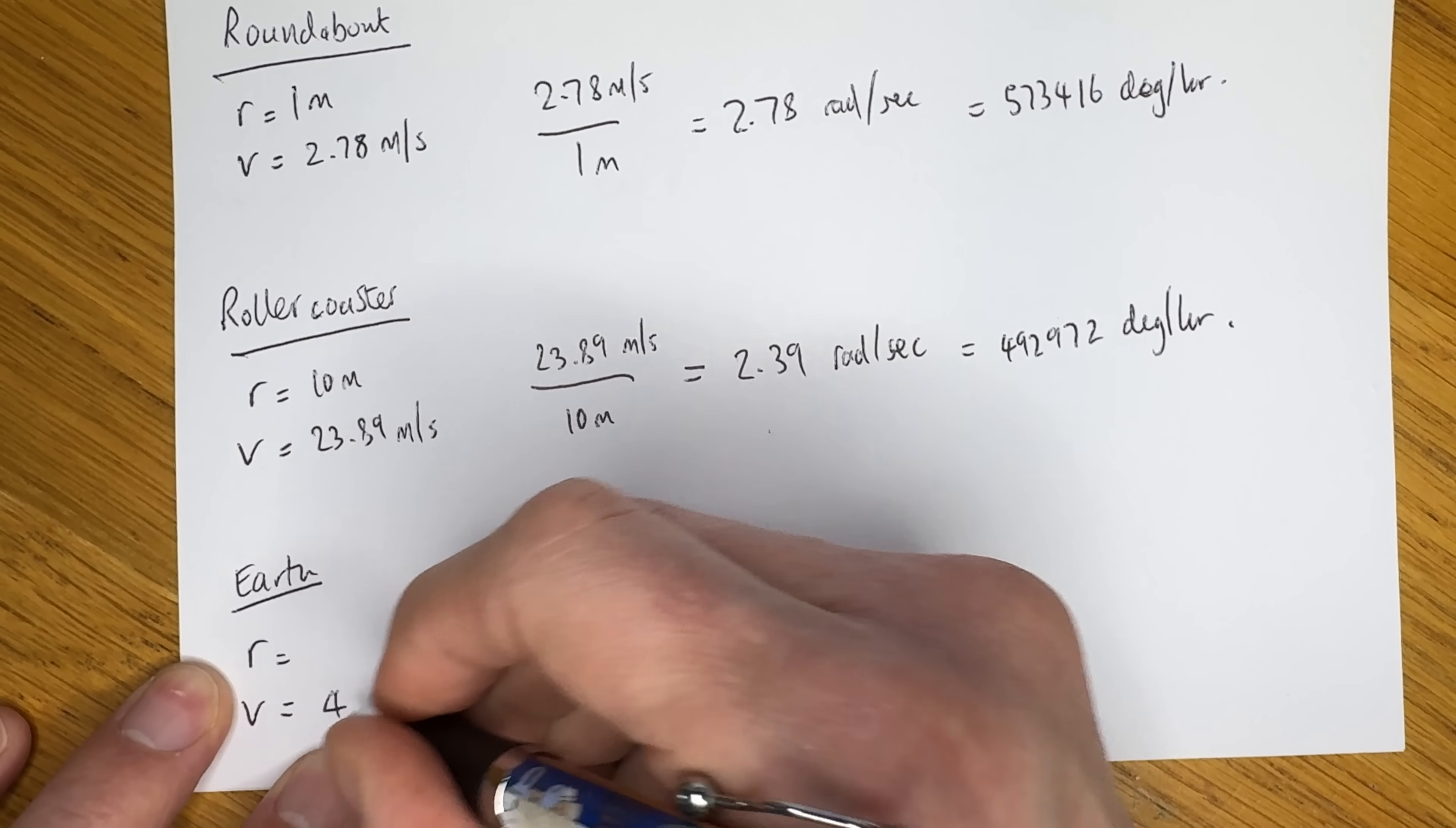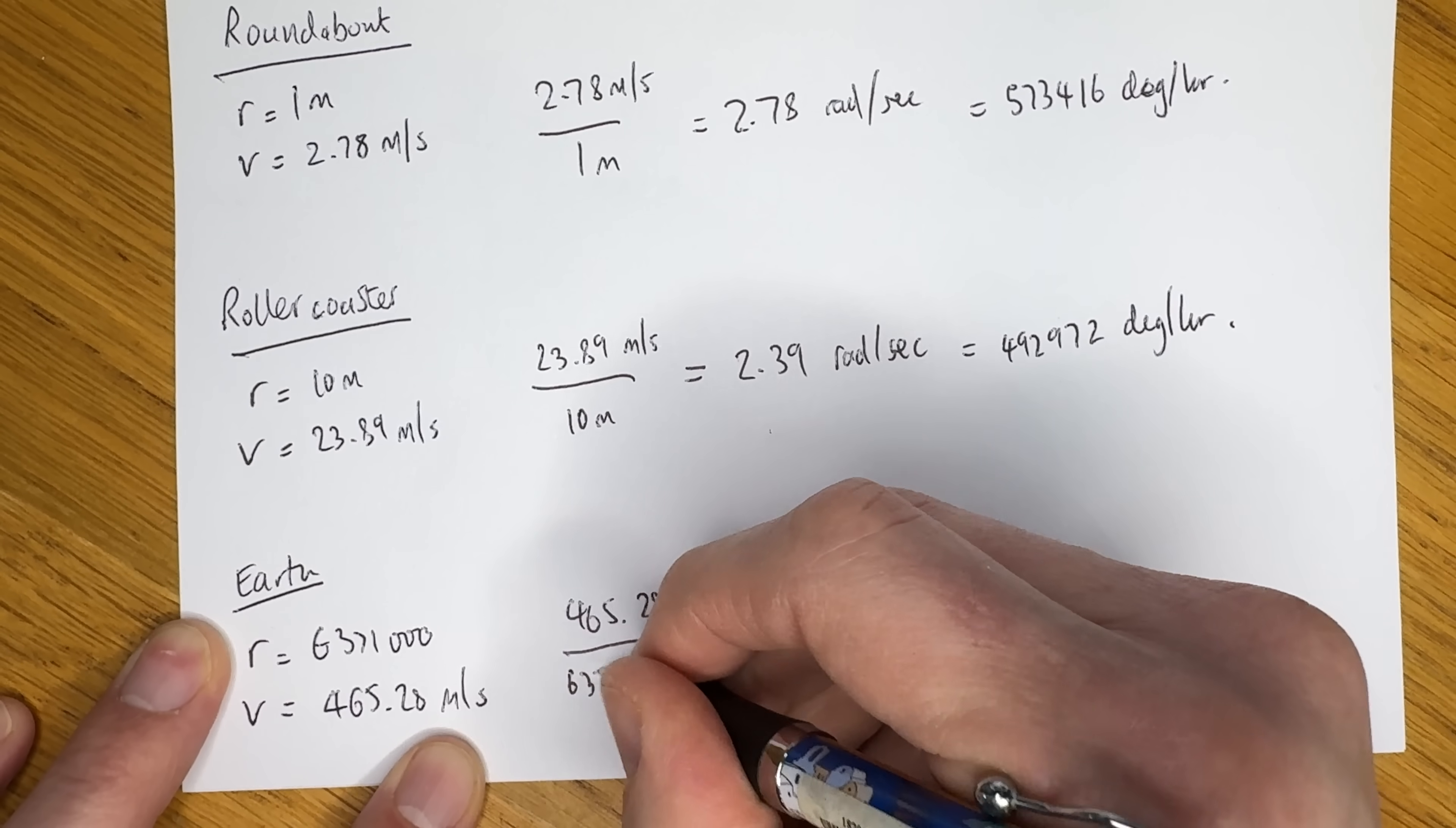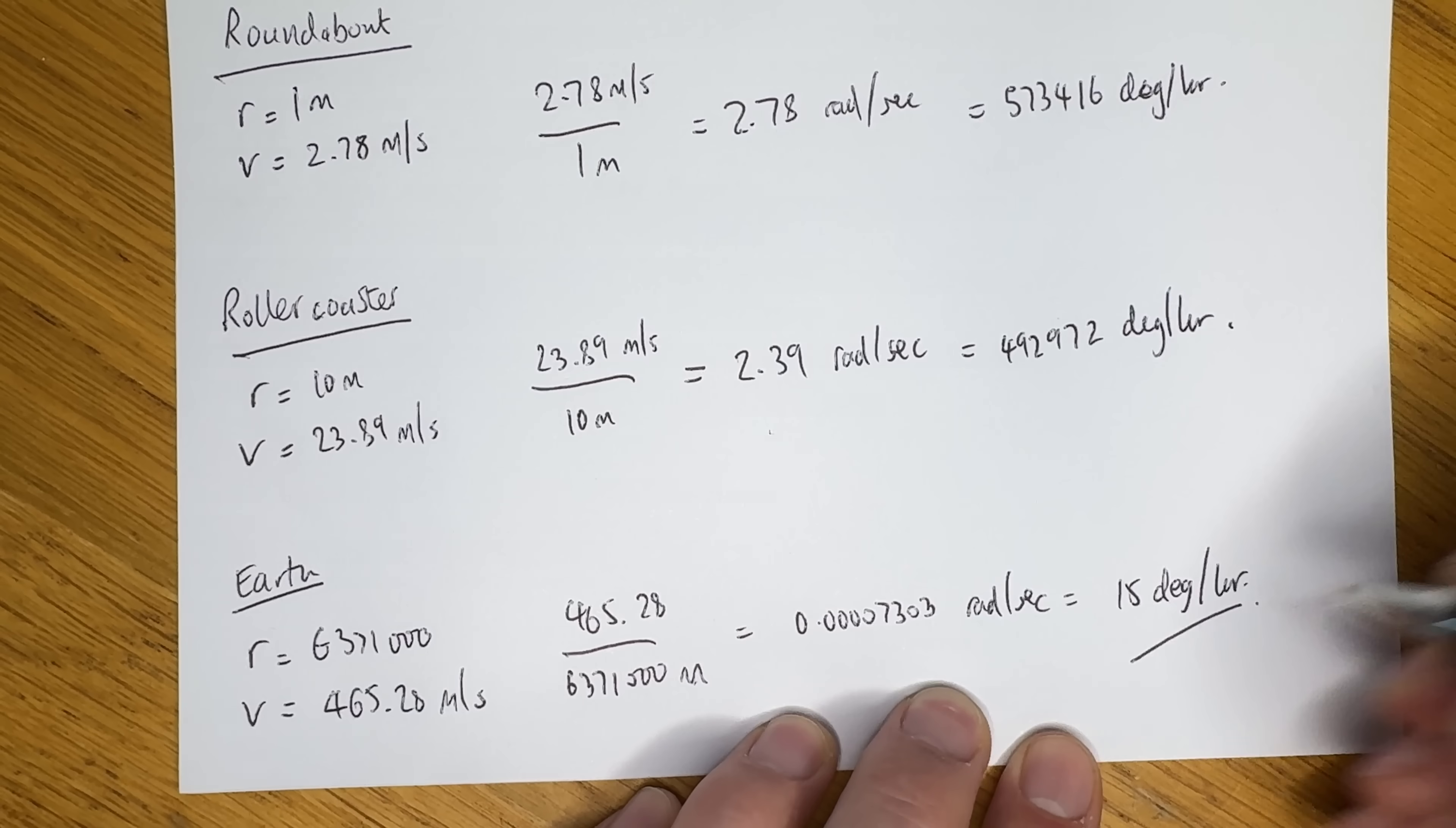And finally, the Earth, which has a linear speed at the equator, let's remember, of 465.28 metres per second. And the radius at the equator is 6,371,000 metres, which gives us an angular speed of 0.00007303 radians per second, or, as we all know, 15 degrees per hour.